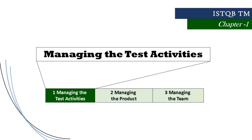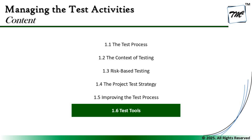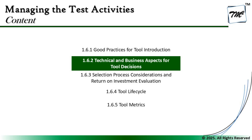We are in chapter one talking about managing the test activities, continuing ahead with 1.6 status test tools. Today we shall be looking at the next sub-segment, 1.6.2: Technical and Business Aspects for Tool Decision. Here we would mainly understand what factors come into consideration when it comes to tool selection and rolling it out. There are many other considerations which we must be aware of.